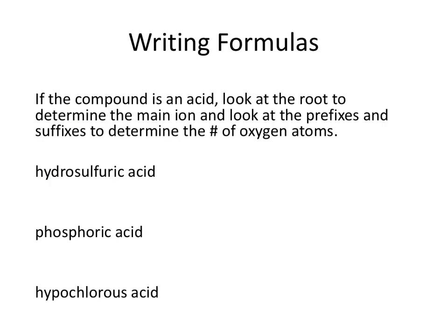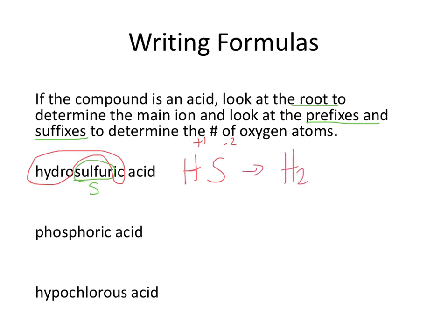If the compound's an acid, look at the root to determine the main ion and the prefixes and suffixes to determine the number of oxygens. The root here is sulfur, so this is going to be a sulfur acid. The suffix hydroic — hydro means binary — so just H and something else; in this case, H and S. The charges still have to cancel: hydrogen is plus 1 from group 1, sulfur is minus 2 from group 16. So I'll need two hydrogens, giving H₂S.